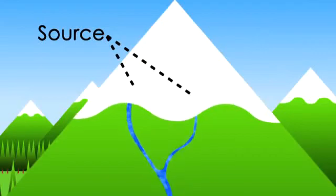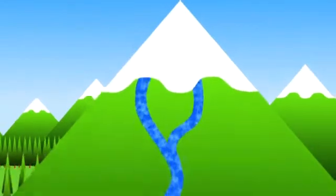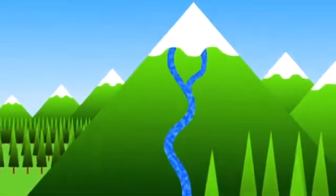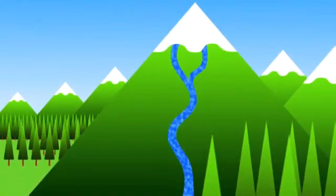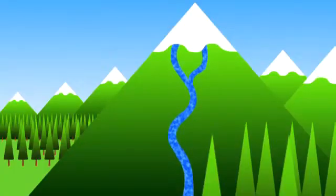A river's origin is called its source. Since rivers flow downhill, sources are usually high in the mountains where water comes from snow melt or an underground spring.